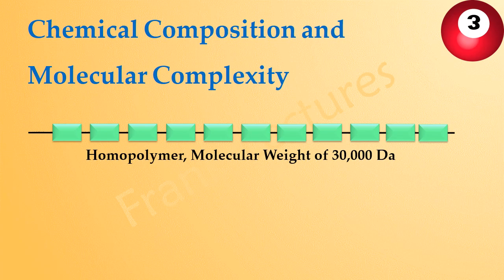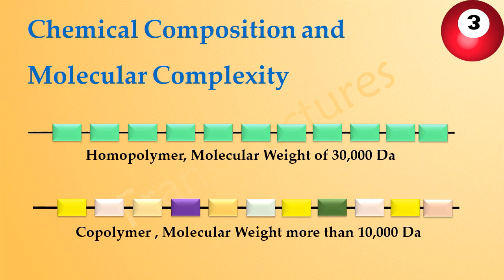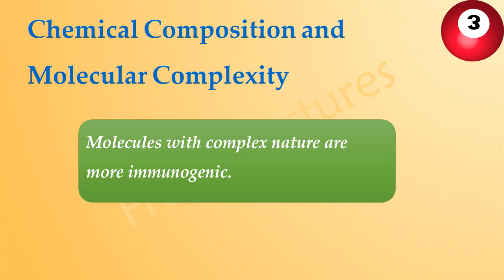In contrast, a copolymer composed of different amino acids with a molecular weight of more than 10,000 daltons is immunogenic. Thus, molecules with a complex nature are more immunogenic compared to simple molecules.